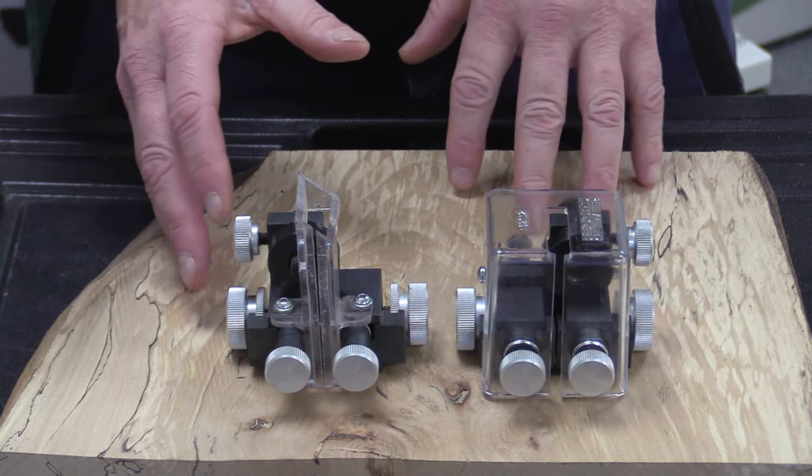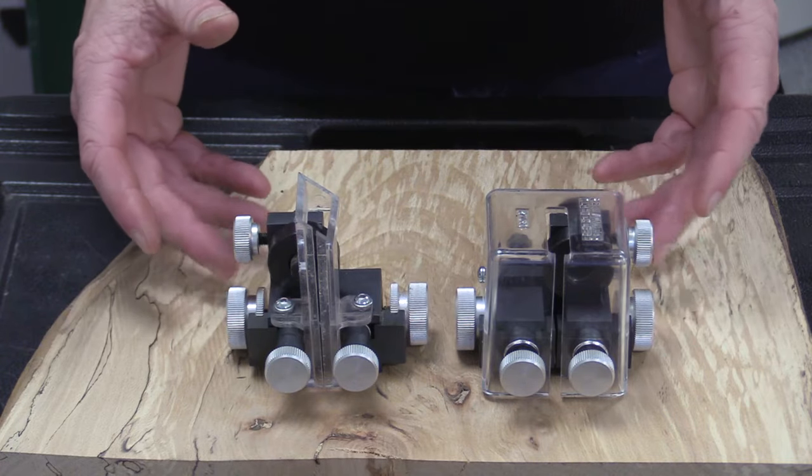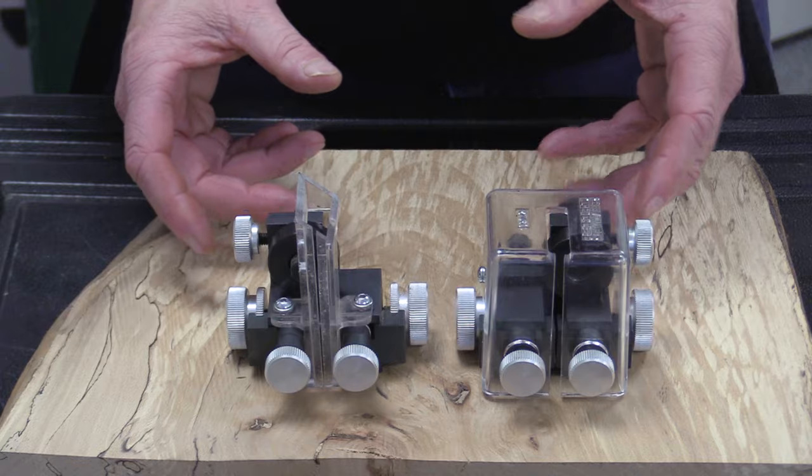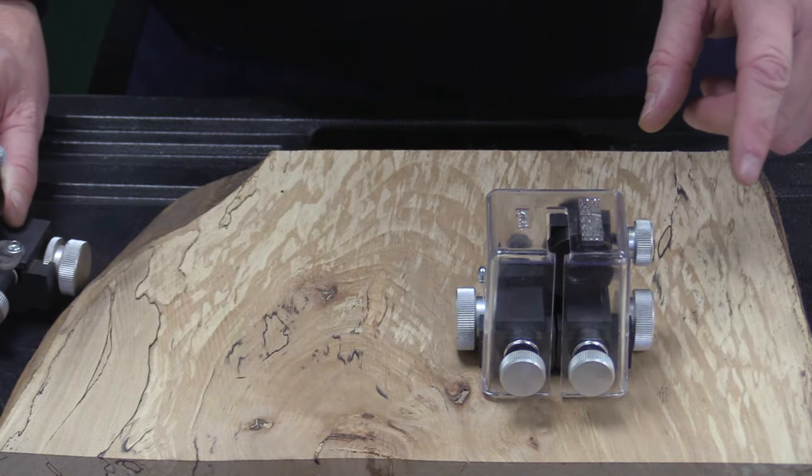OK so now we've removed the upper and the lower blade guide system from the machine, the idea behind that is just to give you a bit more insight and show you the workings of it. So you can see the lower one and the upper one, we'll just move the lower one out of the way at the moment.